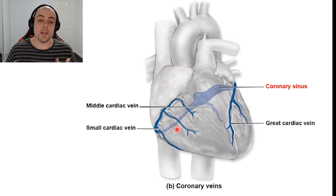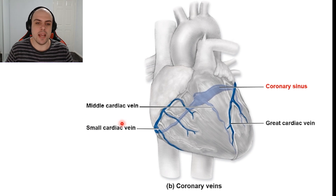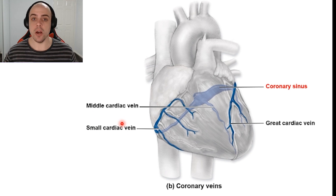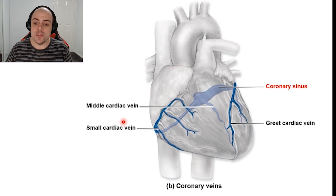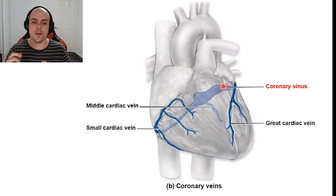We have a couple of things here: the great cardiac vein, middle cardiac vein, and small cardiac vein. What these veins are doing is taking the blood that is now deoxygenated and transporting it into the coronary sinus, and the coronary sinus then connects to the right atrium.